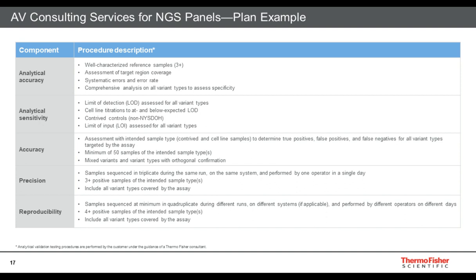We then segue into accuracy — running the meat of the validation with your intended sample type. We also use contrived controls and cell lines mainly to build up the number of variants, since fusion events are very rare in real samples. We take a contrived control and run it to build up the number of fusions the assay is designed to detect. Next is precision — intra-assay repeatability. If we take one sample and repeat it in triplicate on the same system, by the same operator, on the same day, do we get the same variant results, covering all variant types covered by the assay?